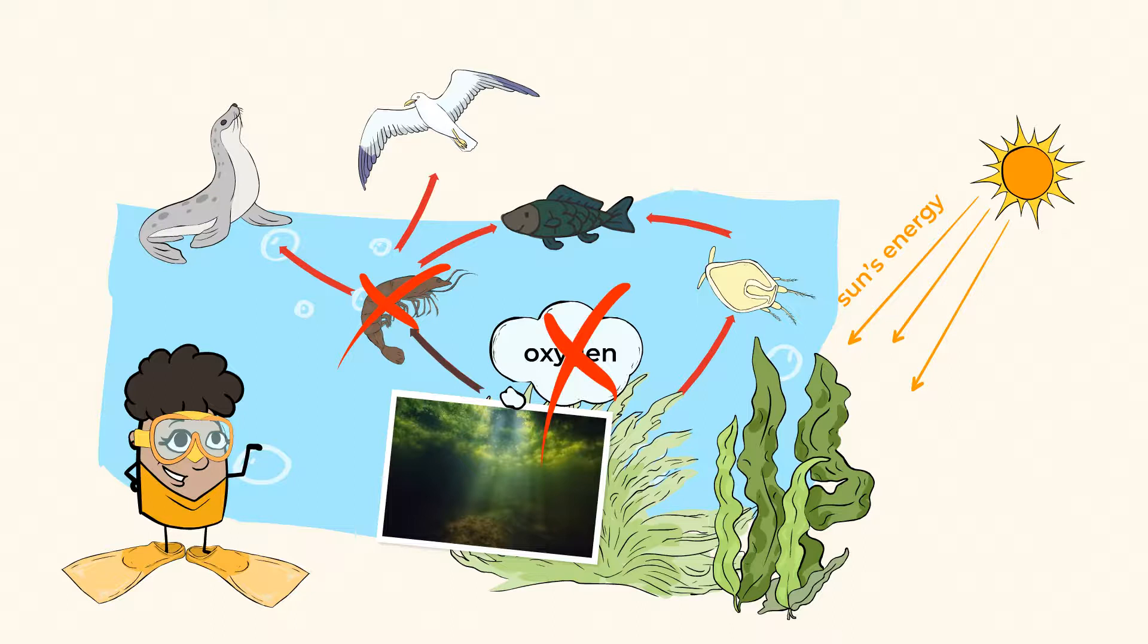If the fish die because of the lack of oxygen, then the seagulls and seals will have less food to eat. Only one change can destroy an entire food chain.